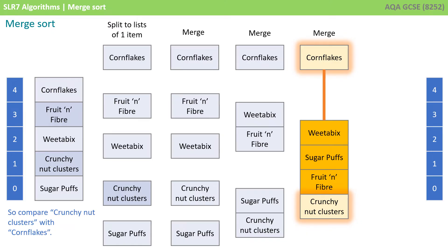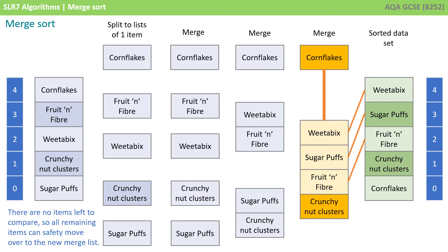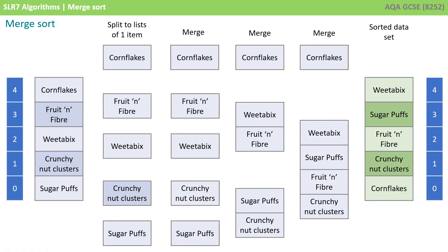Cornflakes comes first, so we compare crunchy nut clusters with cornflakes. Cornflakes comes first, so that gets put into a new merged list. Now we've done that, crunchy nut clusters can move over to the new merged list. There are no items left to compare, so all the remaining items can safely move over to the new merged list. And what we've ended up with is the sorted dataset.